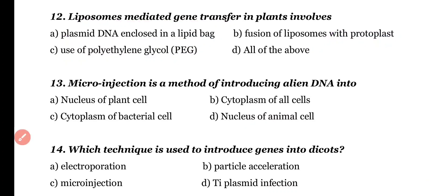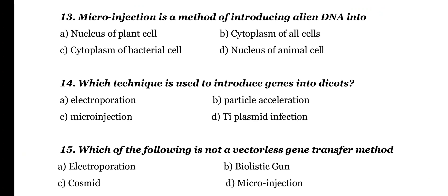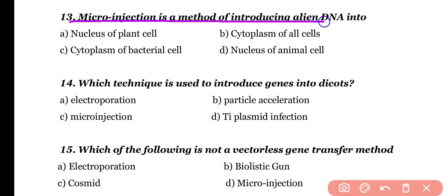Question 13. Micro-injection is a method of introducing alien DNA into: nucleus of the plant cell, cytoplasm of all cells, cytoplasm of bacterial cell, or nucleus of animal cell. Correct answer is option D. Micro-injection introduces alien DNA into the nucleus of animal cells.